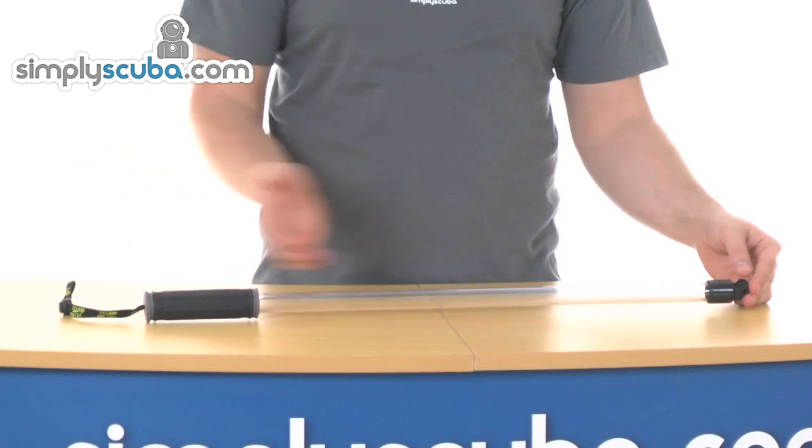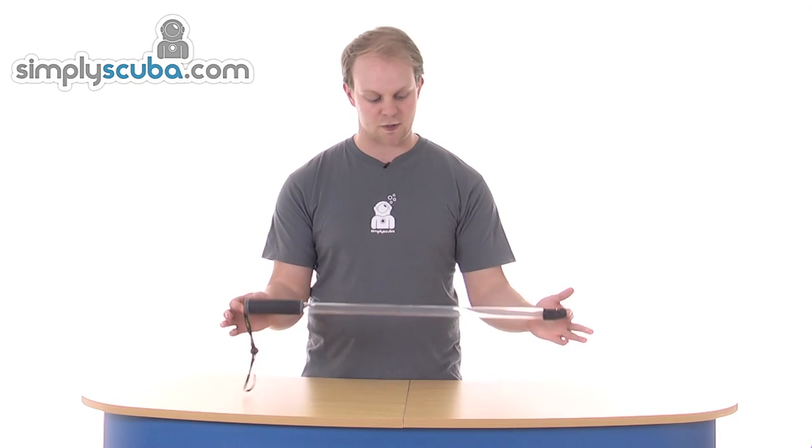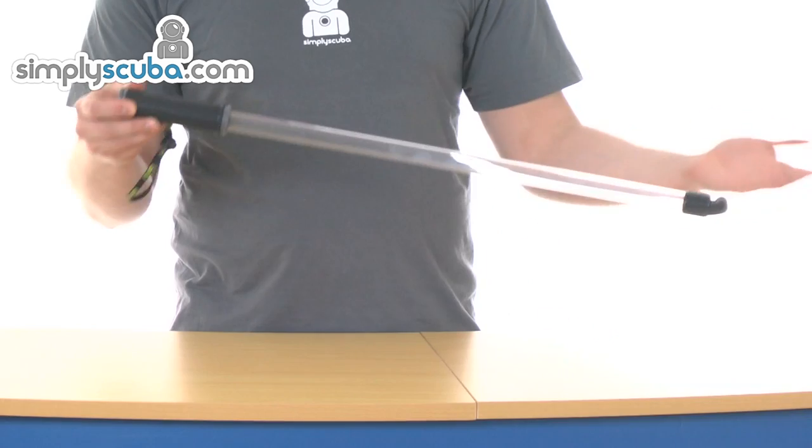So in terms of its design, you see really nice length to it, 27 inches and it is also a transparent pole. So if you have got the camera aimed backwards, it won't actually pick this up, especially if you are underwater.